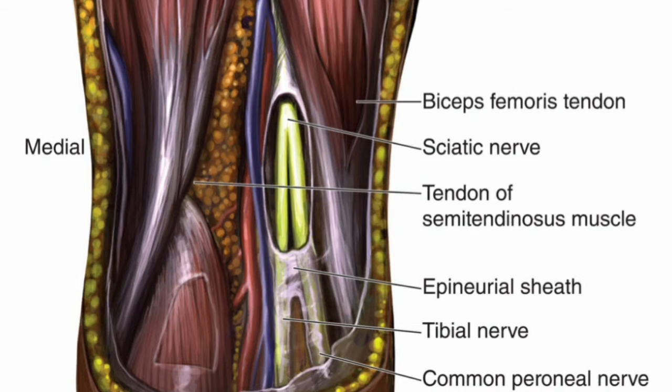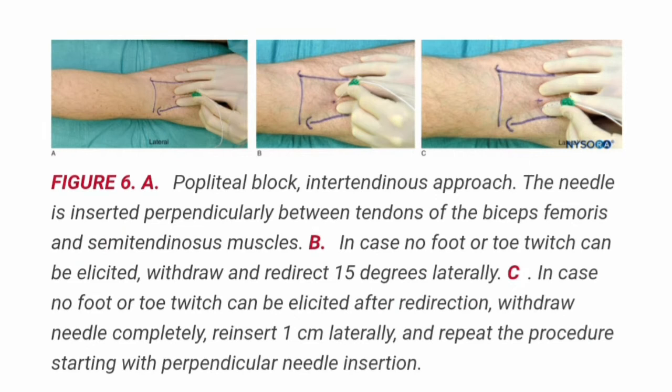In the posterior approach, the patient is in the prone position. The foot on the side to be blocked should be positioned so that even the slightest movement of the foot or toes can be easily observed. This is best achieved by allowing the foot to protrude off the edge of the bed.